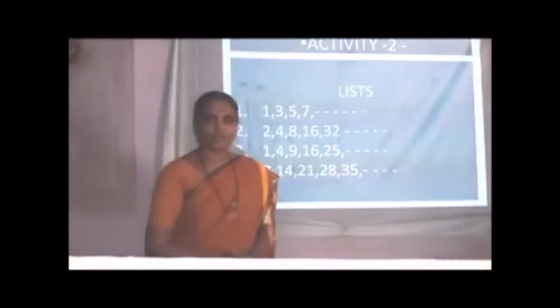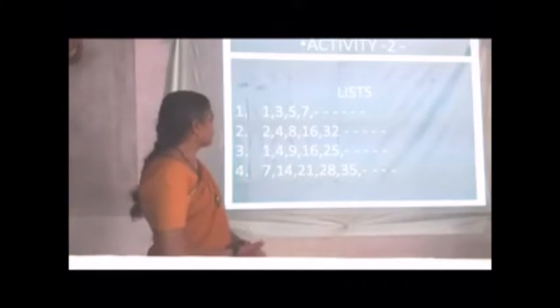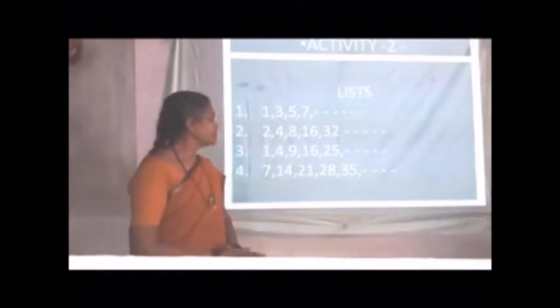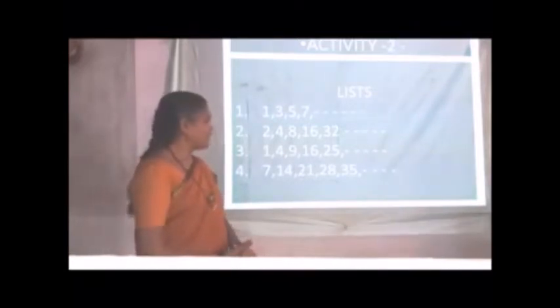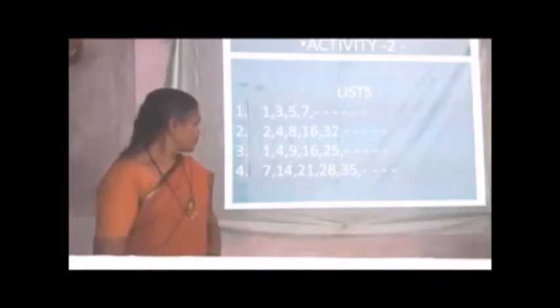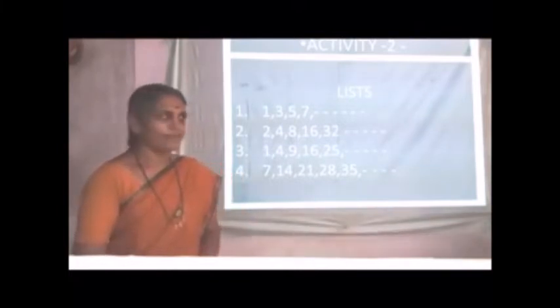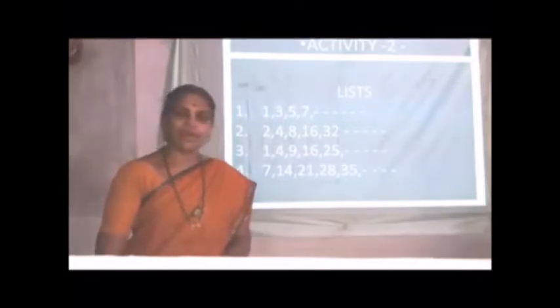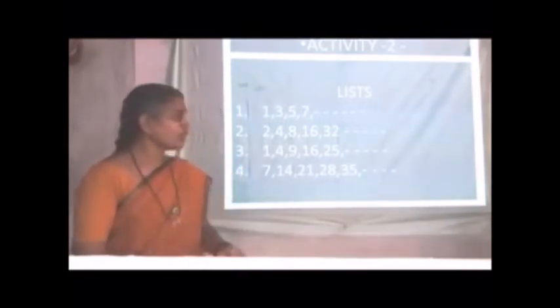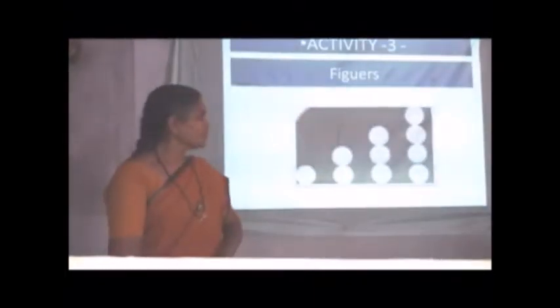Now secondly, we see some lists of numbers, such as set of all natural numbers 1, 3, 5, 7. Secondly, 2, 4, 8, 16, 32. Then 1, 4, 9, 16, 25. Then 7, 14, 21, 28, 35. Observe this list, and you can find next term easily.